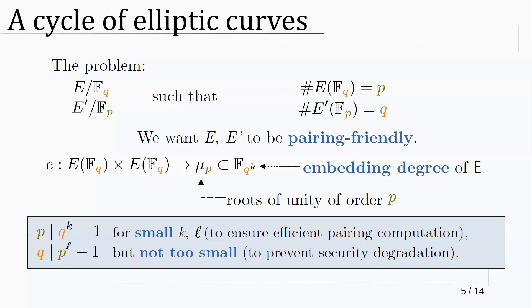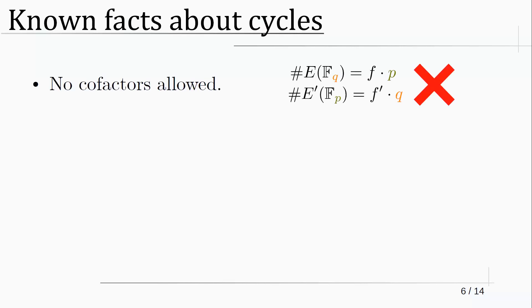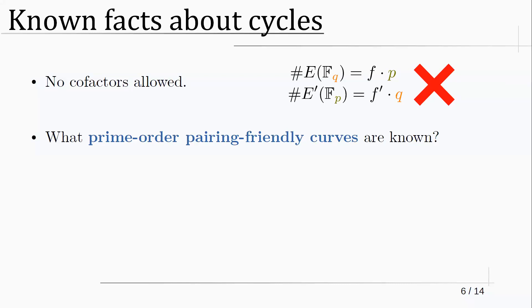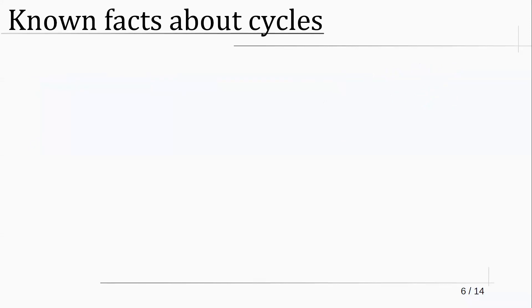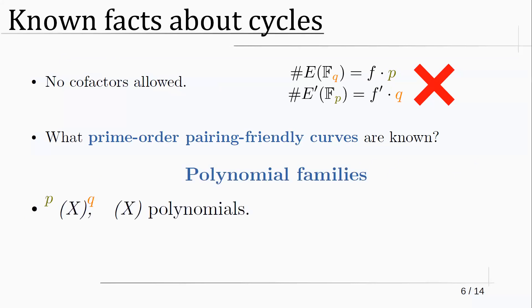What do we know about these cycles? One very relevant property is that there are no cofactors allowed — you could think of relaxing the problem to curves whose order is a small multiple of p and q, but such curves will not lead to cycles. We are stuck with strictly prime-order curves. This is already hard: there are many ways to get curves that are pairing-friendly or prime-order, but both at the same time is slightly harder.